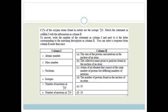Final question. It says, 0.2% of the oxygen atoms found in nature are the isotope 18O8. In other words, they've got 18 protons and neutrons and only 8 protons. It says, match the statement in column 1 with the information in column 2. To answer, write down. So we need to match column 1 with column 2.